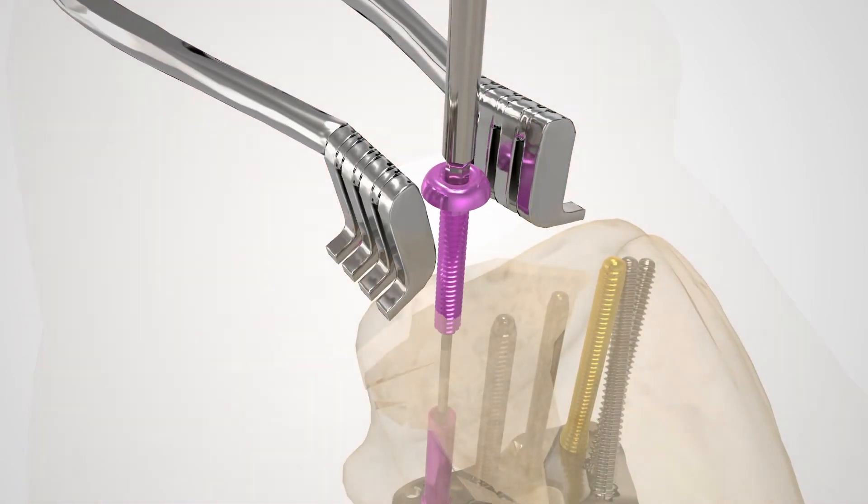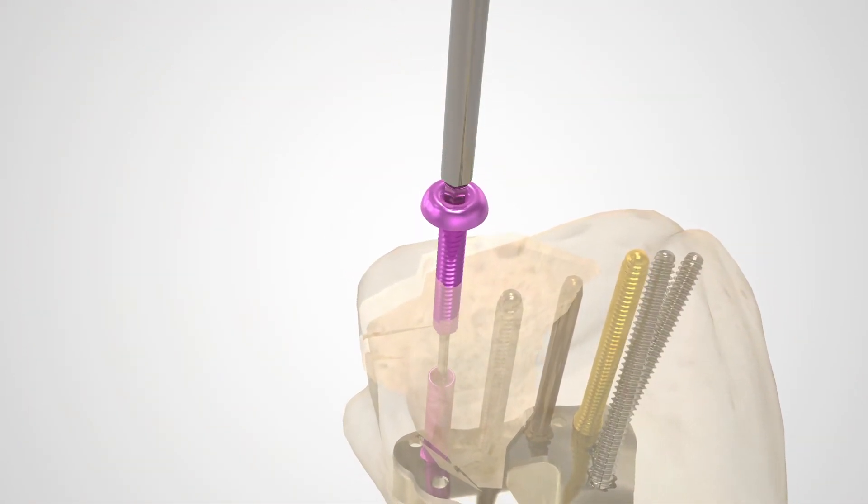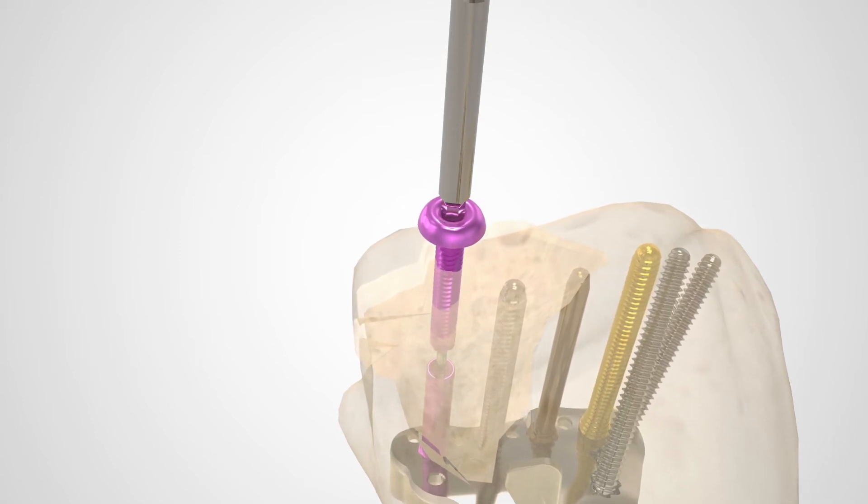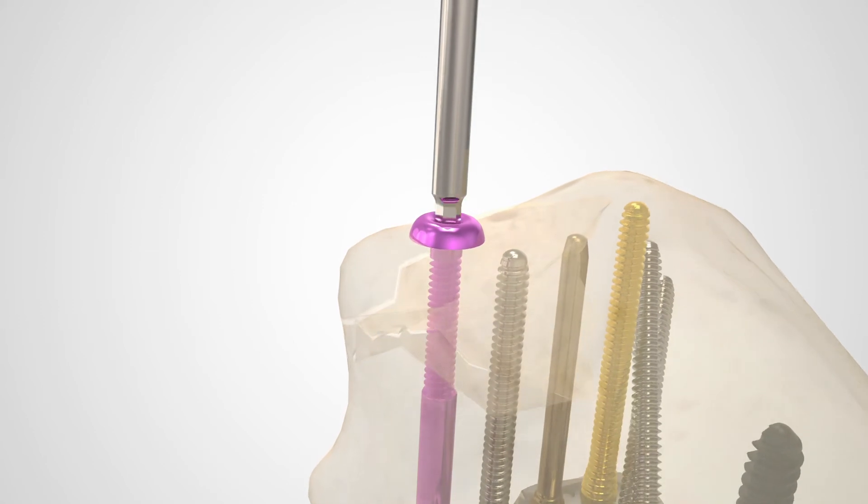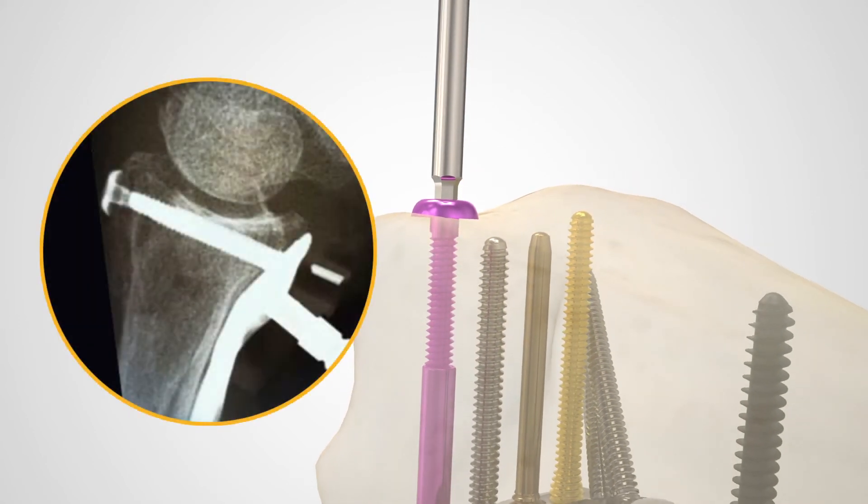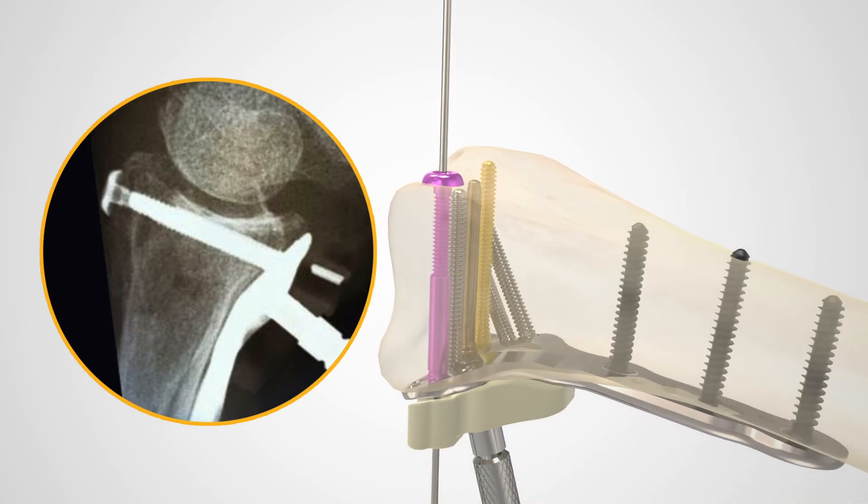Insert and tighten the FragLock compression screw until the desired compression is achieved. Ensure the FragLock compression screw head is fully seated on the bone and that the tendons are clear of the screw head. This should be done with fluoroscopic assistance to avoid over-compression of the dorsal cortex.